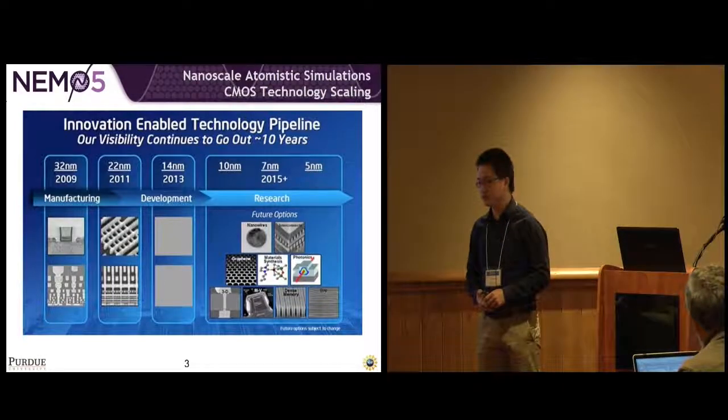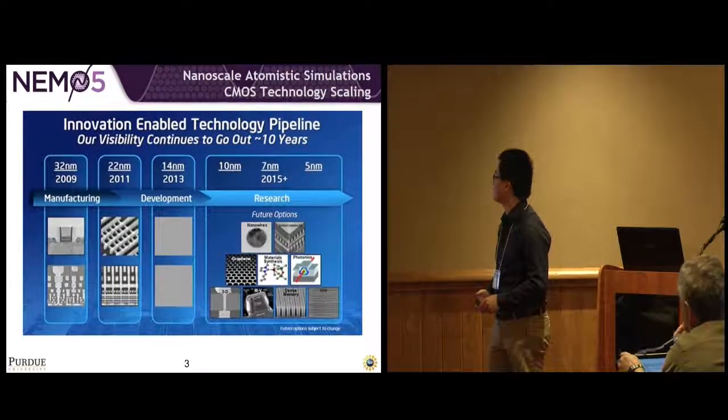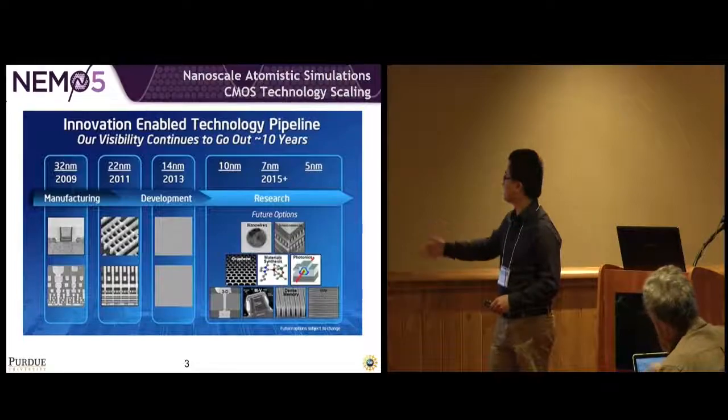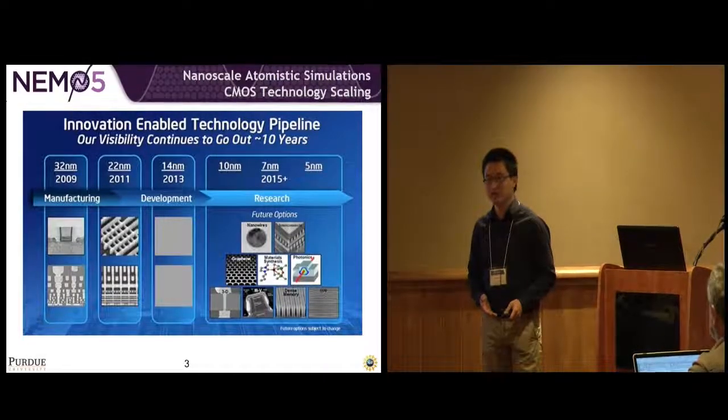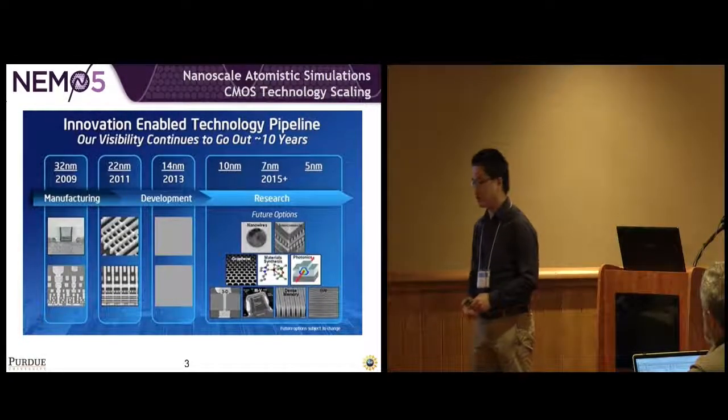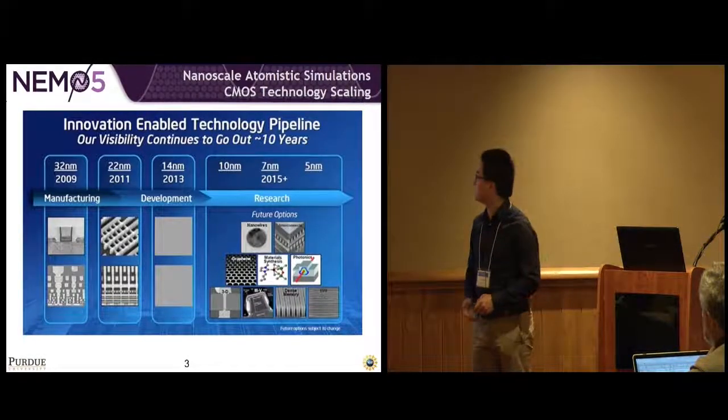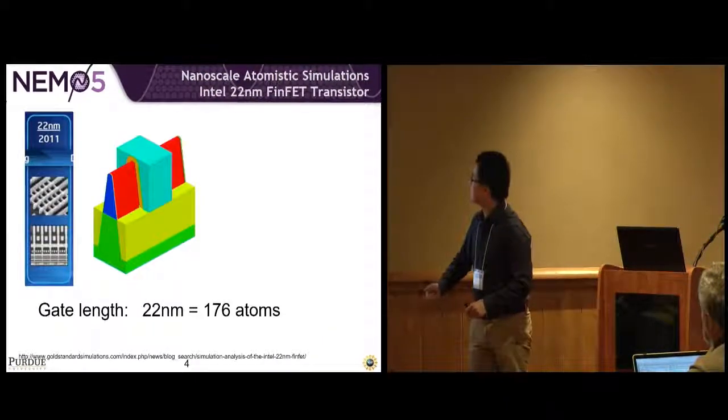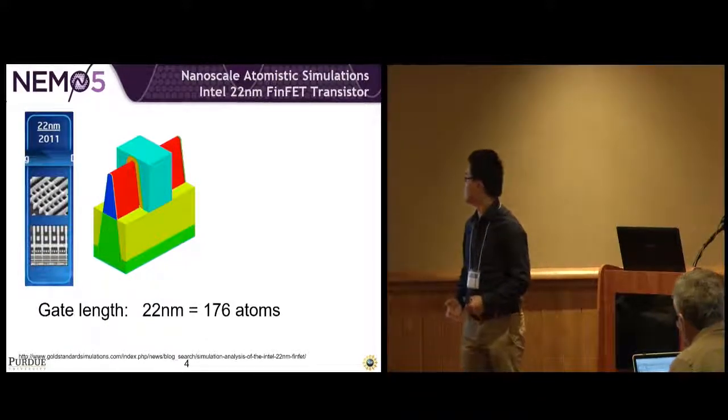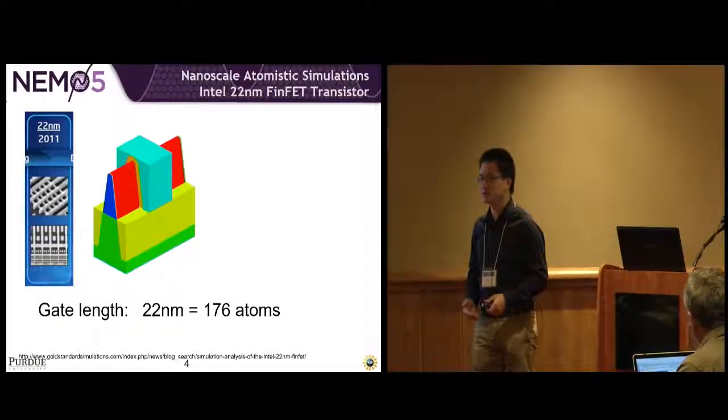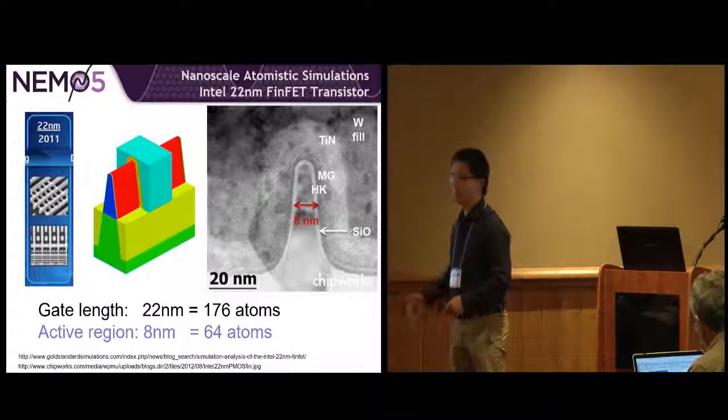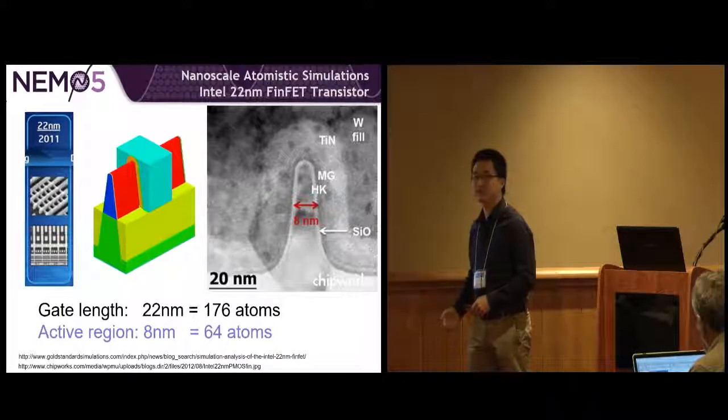To motivate the nanoelectronic simulations, here is a roadmap of transistor scaling. Now we are at about 10 nanometers, and Intel just announced the seven nanometer fab in Arizona a few months ago. Although it's going close to the end of Moore's law, we're still scaling down. Let's take the 22 nanometer transistor for example. The gate length is 22 nanometers, almost 176 atoms. But when you take a look at the cross-section, the active region is only eight nanometers, which equals about 64 atoms.